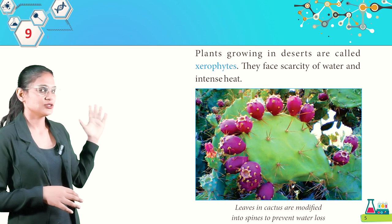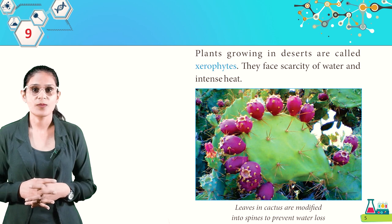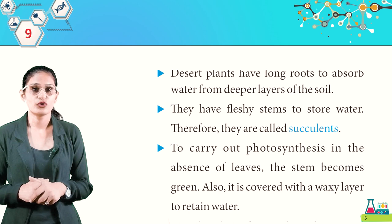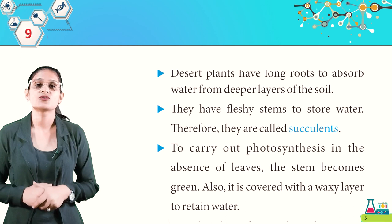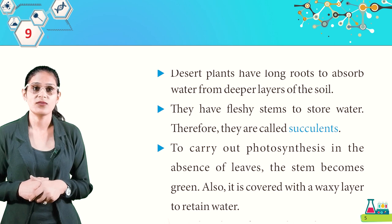Plants growing in deserts are called xerophytes. They face scarcity of water and intense heat. Their leaves are modified into spines to prevent water loss, and they have long roots to absorb water from deeper layers of soil. They have fleshy stems to store water — hence called succulents. To carry out photosynthesis in the absence of leaves, the stems become green and are covered with a waxy layer to retain water.